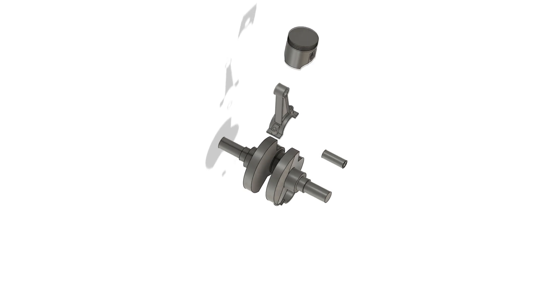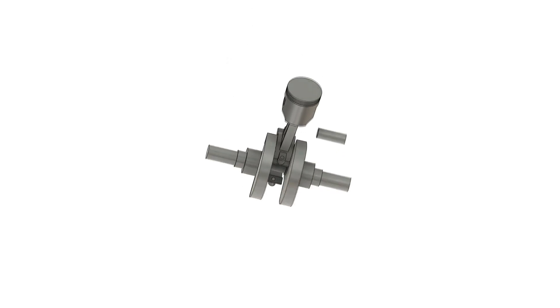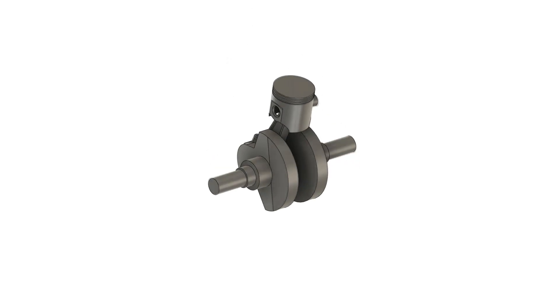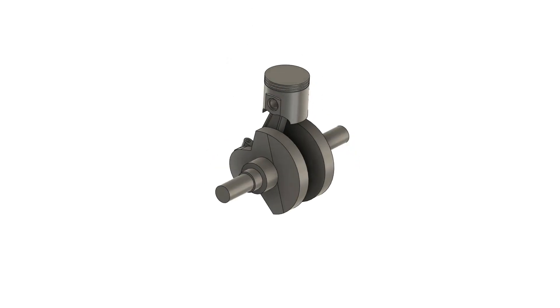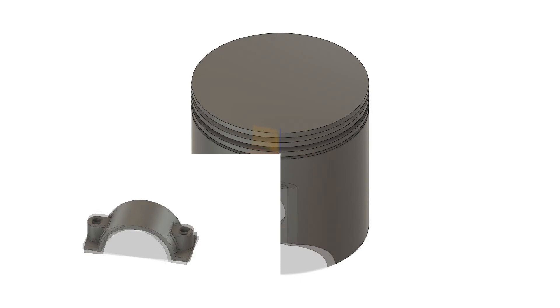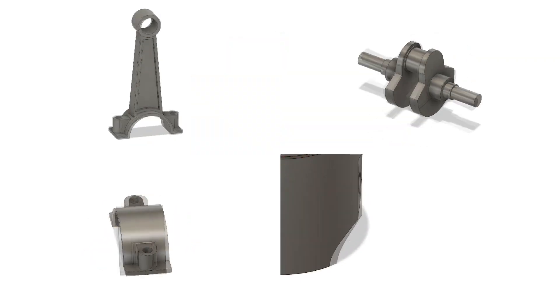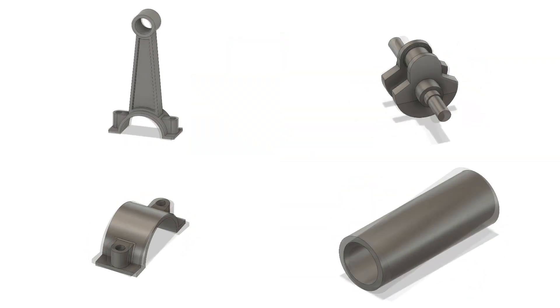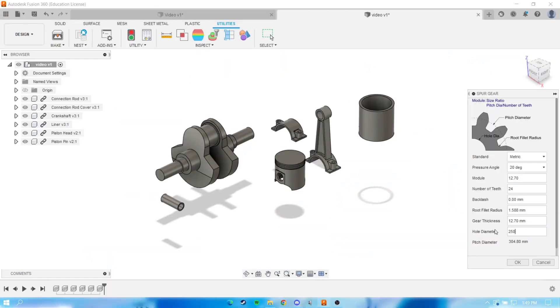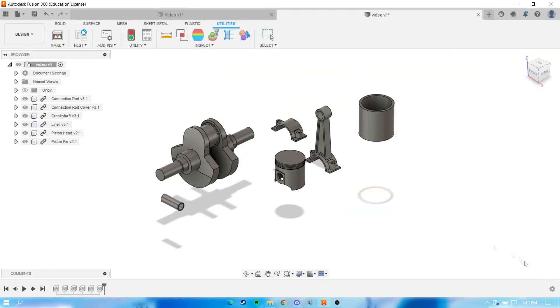First of all, what you need of course is the 3D model of our animation, such as the piston, connection rod, crankshaft, pin piston, and also the gear and the liner.